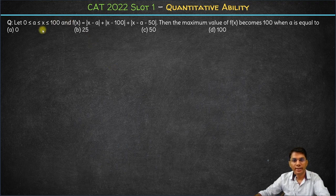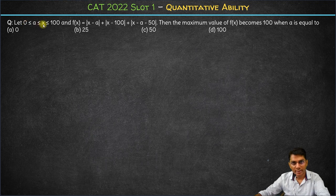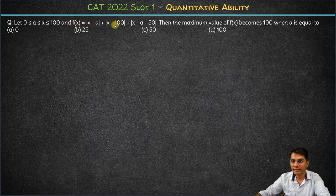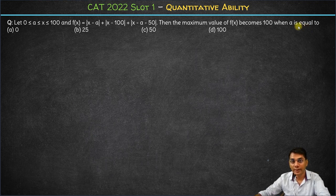In this question, we have a greater than 0, x is greater than a, and 100 is greater than or equal to x. f(x) is defined as |x - a| + |x - 100| + |x - a - 50|. For what value of a is the maximum value of f(x) equal to 100?